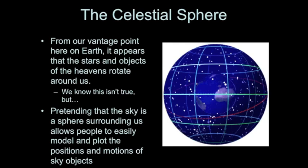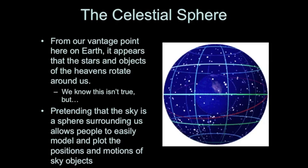Now, we know this isn't true — it's because the Earth is the thing that is rotating. But from our vantage point, everything out there in space appears to be going around us. For thousands of years, humans have used a model to describe these motions called the celestial sphere, and it allows us to estimate where things in the sky will be and what their motions will look like.